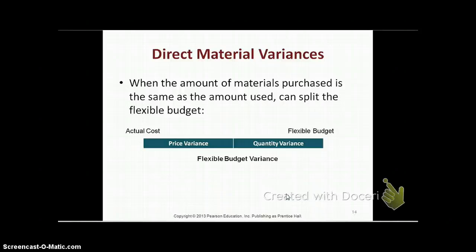When the amount you purchase is different from what you use — so you have some ending inventory — the price variance plus your quantity variance will not equal your flexible budget variance.